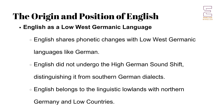As a member of the Low West Germanic group, English shares specific phonetic changes with German and other languages in this category. However, English did not undergo the High German sound shift, a modification of certain consonants that occurred in the languages of Southern Germany. This exclusion places English in the lowlands of the West Germanic linguistic area, along with the languages of Northern Germany and the Low Countries.